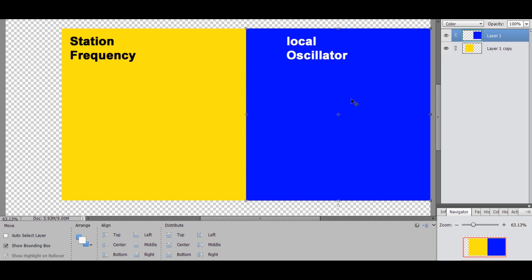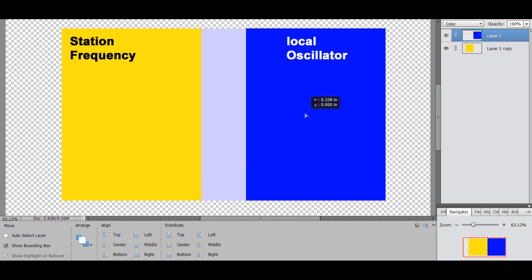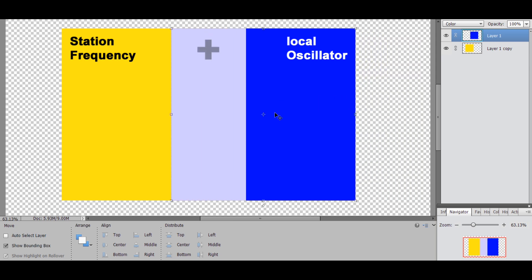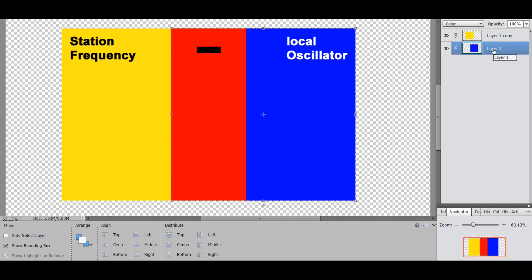Here we have our station frequency and our local oscillator frequency. When we mix them together and add them together we get a higher frequency. In our radio we use the difference and that is 455 kilohertz, and that puts the intermediate frequency just below the AM band.